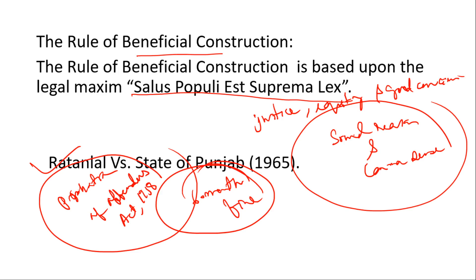To summarize: the ex post facto law under Article 20 Clause 1 applies to criminal laws only, not civil laws. Article 20 Clause 1 is available only against conviction or sentence, not against trial. There is a difference between the American and Indian constitutions here — in the American Constitution, the ex post facto law provision is broader and applicable to conviction, sentence, and trial. In the Indian Constitution, it applies only to conviction and sentence, not against trial.